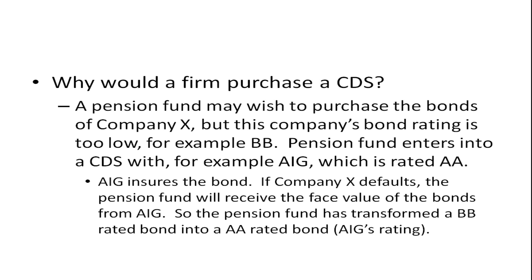AIG insures the bond, so if Company X defaults, the pension fund will receive the face value of the bonds from AIG. The pension fund has effectively transformed a double-B rated bond into a double-A rated bond, because AIG is guaranteeing they'll pay off if Company X defaults. You only care about AIG's bond rating, since they're the ones who will pay in a default. If there's no default, Company X just pays off — no problem.